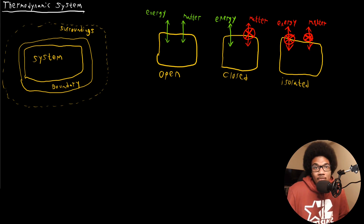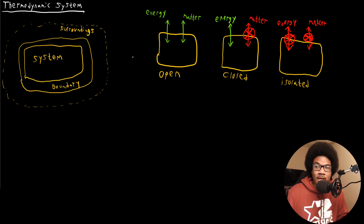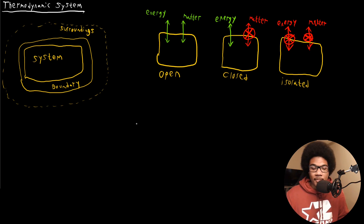Most systems you'll see in reality will either be open or closed. So it's going to be important for us to not only define what our system is, but also the confines of what can escape or be transferred in — can it release energy, can it release matter to the surroundings?